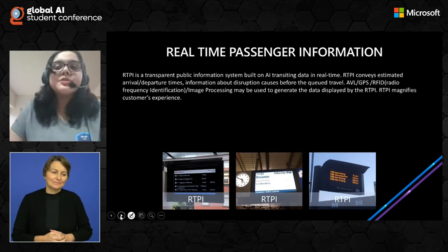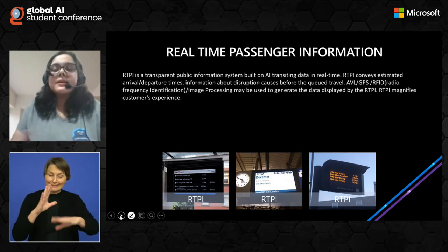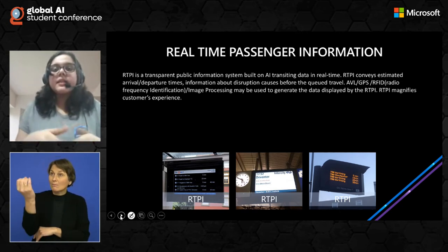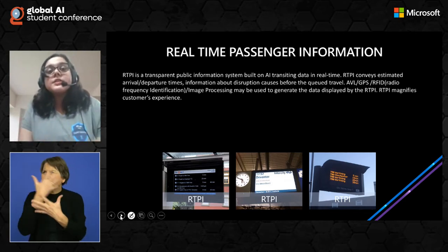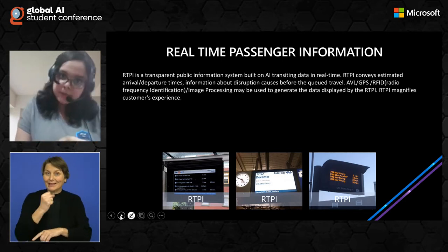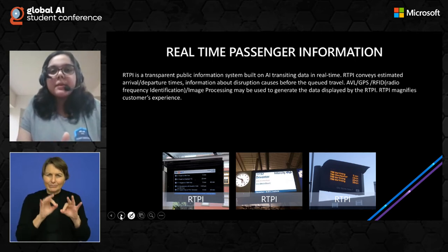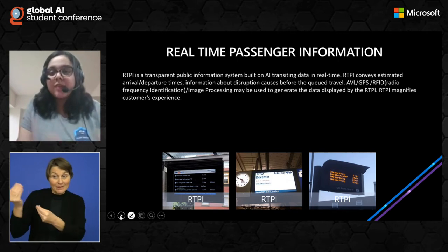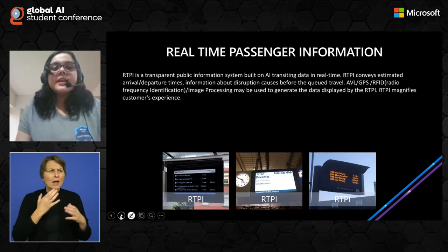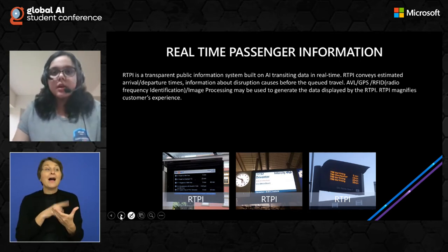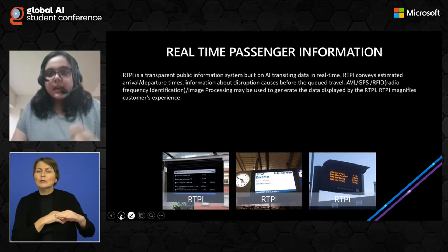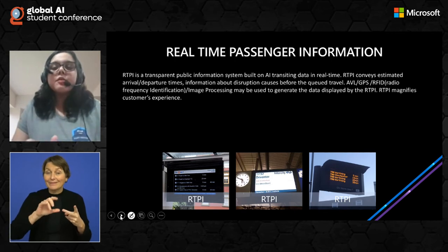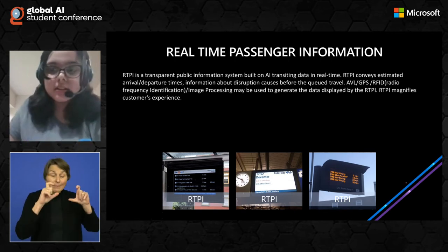Next we have Real-Time Passenger Information (RTPI). RTPI is basically built on Automatic Vehicle Location and GPS technologies. GPS is the technology used for real-time passenger information systems. RTPI is a transparent public information system built on AI transiting data in real time, and it gives you real-time updates about where your public transport is right now. RTPI conveys estimated arrival and departure times and information about disruption causes before travel. AVL, GPS, RFID, and image processing may be used to generate the data displayed by the RTPI.